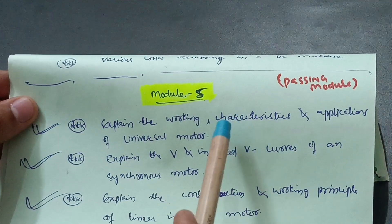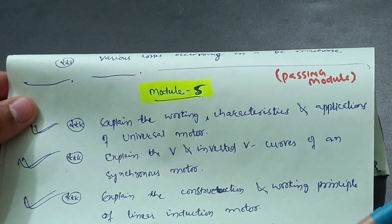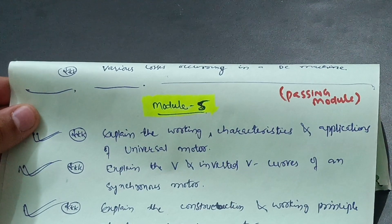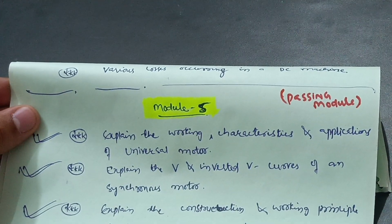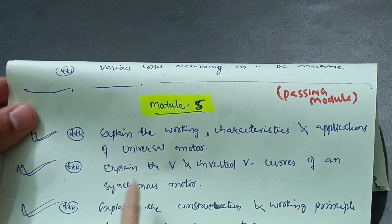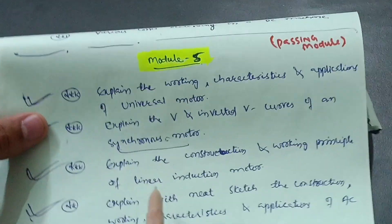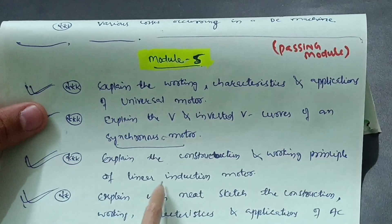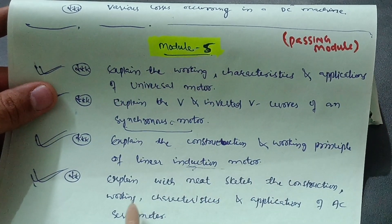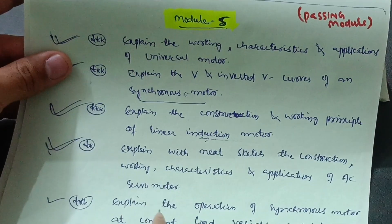The important questions in module five are: explain the working characteristics and applications of the universal motor — this is a frequently asked question in every examination, so focus on it and include a neat sketch. Then, explain the V and inverted V curves of a synchronous motor. Next, explain the construction and working principle of a linear induction motor. Also, with a neat sketch, explain the construction, working characteristics and applications of the AC servo motor.